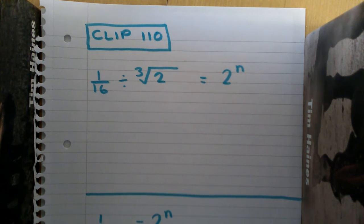If we take a look at that first question, I'm trying to figure out what n is, so I'm trying to find out what the index is. What I've got to do is convert 1 over 16 into 2 to the power something, and also convert the cube root of 2 into an index as well.